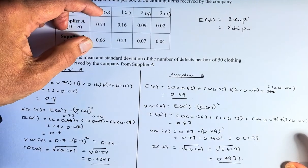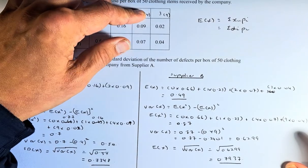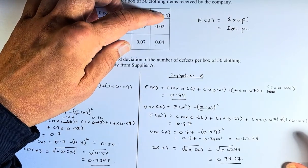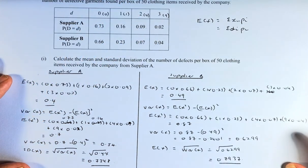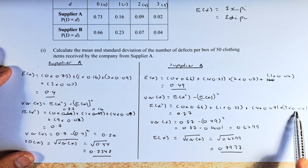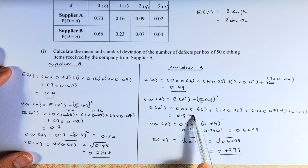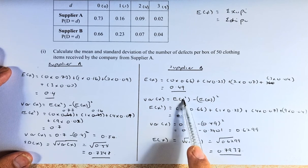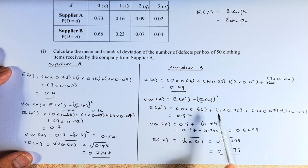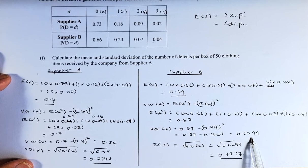We take 0 times 0.66, plus 1 times 0.23, plus 4 times 0.07, plus 9 times 0.04, and this can be seen in that line there. You put in your calculator, and the answer is 0.87. Once you have found 0.87, that is 0.87 minus the square of 0.49, and the answer is 0.6299.